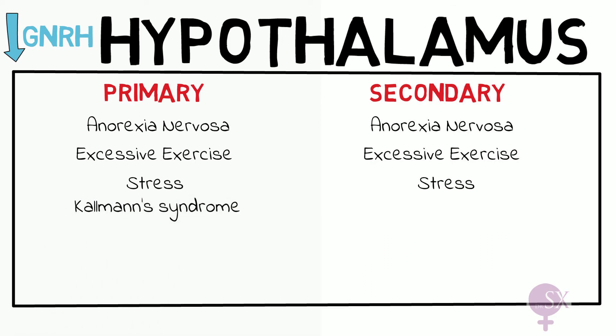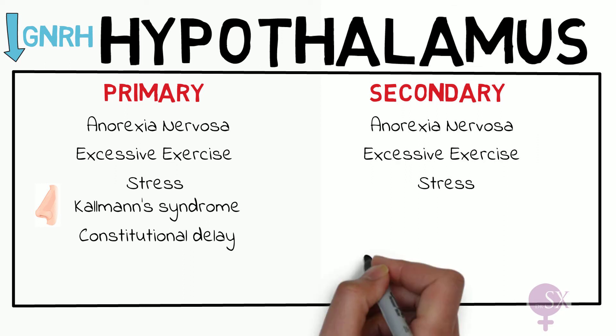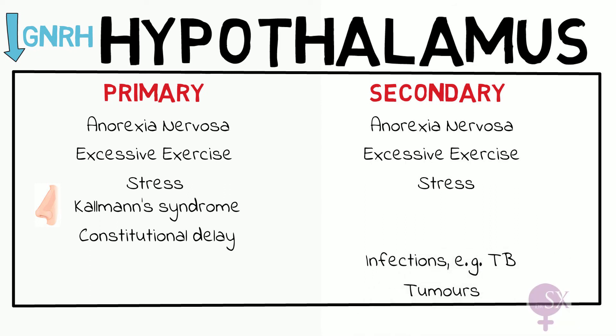Next, we have Kallmann syndrome — a rare condition where there are no GnRH neurons present from birth, so no GnRH is produced. These patients typically have no sense of smell, which is called anosmia. Then we have constitutional delay, where typically the mothers of these girls also had delayed puberty; they may be short and may have had delayed secondary sexual characteristics. Other rare causes of secondary amenorrhea here are infections such as TB, and some tumors.